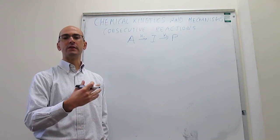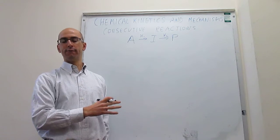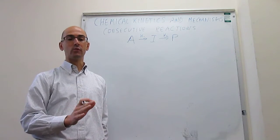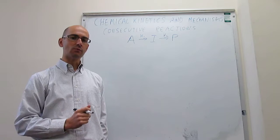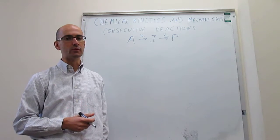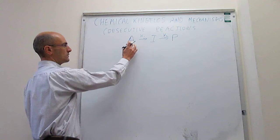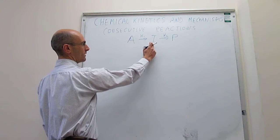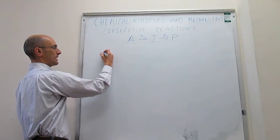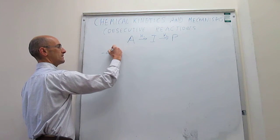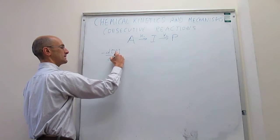This is going to be a generic mechanism that we are going to solve fully analytically without any approximations, and then in later videos we will see how this changes when you introduce approximations. What we can do is try to figure out what the integrated rate laws are for each one of the species. The first one would be A, the reagent.